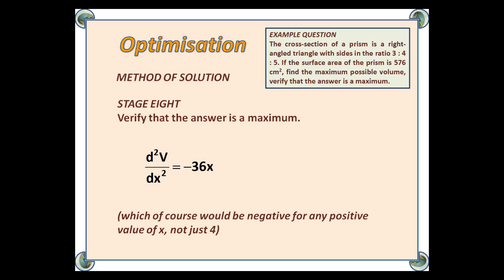Stage 8: Verify that the answer is a maximum. For this, we use the second differential. So, we differentiate 288 - 18x², which gives us -36x, which, of course, is negative for any positive value of x, not just 4.